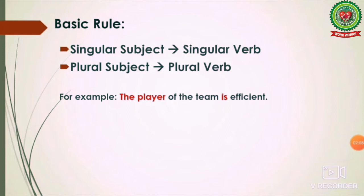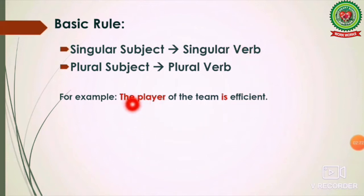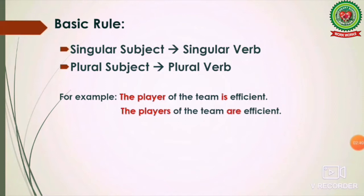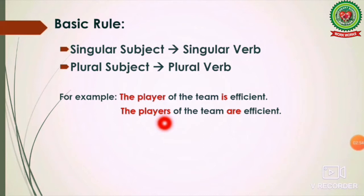For example: 'The player of the team is efficient.' Our rule says singular subject takes a singular verb. Here the subject is 'the player,' which is singular, so we use the singular verb 'is.' We cannot say 'The player of the team are efficient.' Next: 'The players of the team are efficient.' Here the subject is 'the players,' which is plural, so the verb used is plural — 'are.'